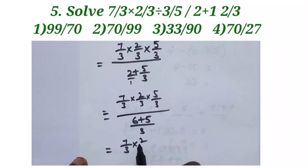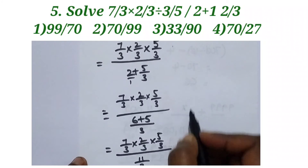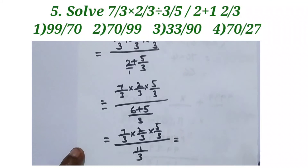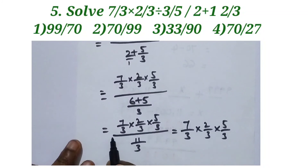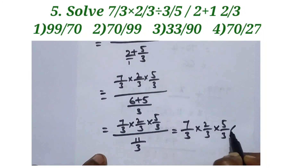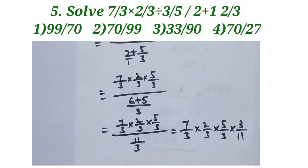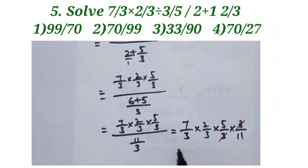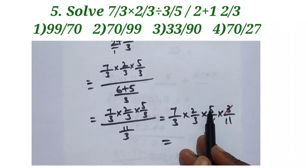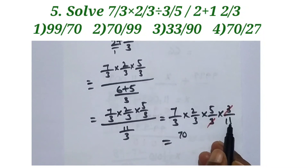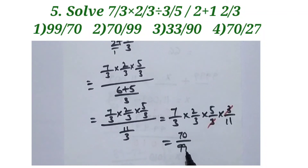Now: 7/3 into 2/3 into 5/3 divided by 11/3. Take the reciprocal of 11/3, which is 3/11, and multiply. The 3s cancel. Multiplying: 7×2×5 equals 70; 3×3×11 equals 99. So the answer is 70/99. Option 2 is the right answer for this question.